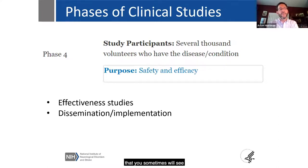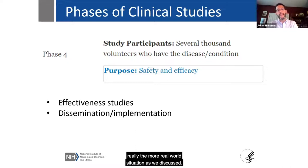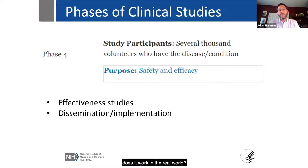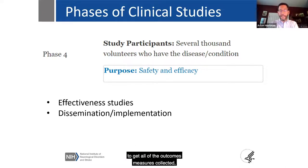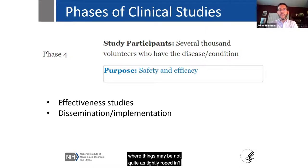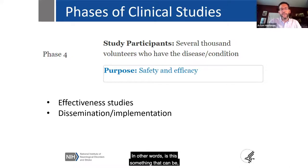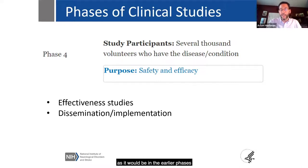Typically in Phase 4 and beyond, we talk about effectiveness — the more real-world situation. Does the drug work in a wider, less selective group of volunteers? Does it work in the real world? We also frequently talk about dissemination and implementation studies — can this be widely implemented by a study team that maybe isn't as specialized as in the earlier phases where everybody knows every detail about the drug and there's a very strictly applied manual of procedures?